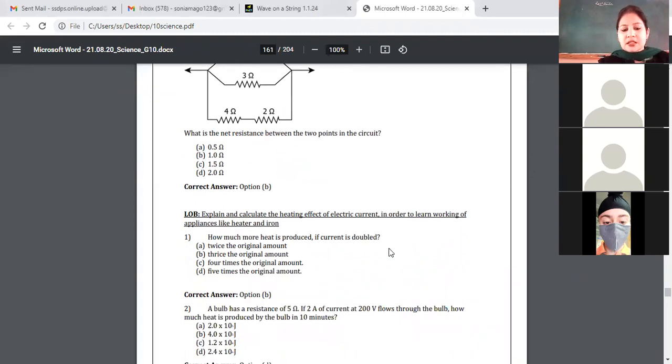A bulb has a resistance of 5 Ohm. If 2A of current at 200V flows through the bulb, how much heat is produced by the bulb in 10 minutes? Which formula we are going to use? R is given, I is given, V is given. Time is also given.